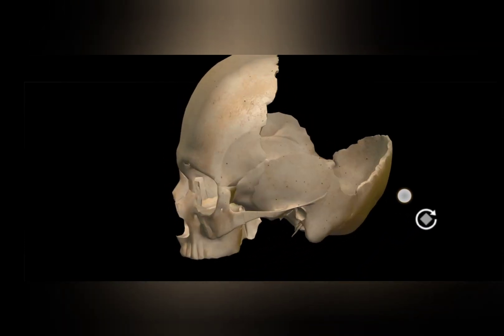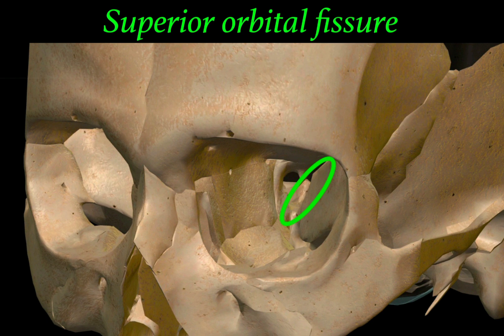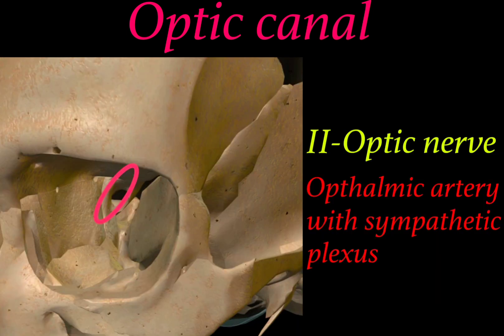When we rotate the skull and find the anterior view, this is how the superior orbital fissure is seen in the orbit of the eye. Above the superior orbital fissure there lies the optic canal, which gives passage to the 2nd cranial nerve — the optic nerve — and the ophthalmic artery with sympathetic plexus.